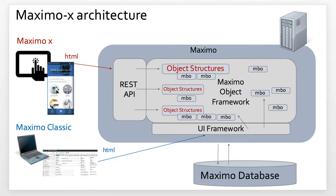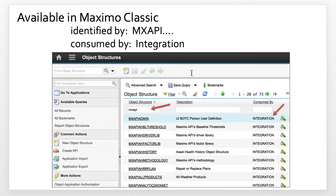How does this all come together, and how can you find out details about the object structures that are used? To understand Maximo object structures, go back to Maximo Classic — it's available from the Integration Object Structure application. To find these object structures, on the list tab, simply put in MX API, which is used as an identifier, and also that they'll be consumed by integration. You'll see a number of APIs here — some are used by Maximo X and some are used by Maximo Classic.